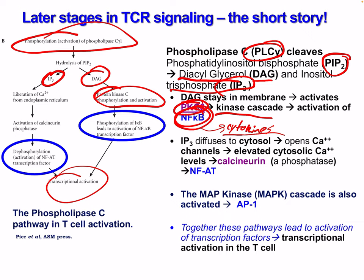On the other side, IP3 diffuses to the cytosol and opens calcium channels in the ER. These increased calcium channels cause elevated cytosolic calcium, which results in calcineurin activation — a phosphatase — resulting in NFAT activation. We can also have the MAP kinase or AP1 (activator protein 1) pathway. Together these pathways lead to the activation of transcription factors and transcriptional activation in the T cell.